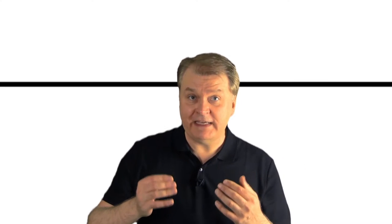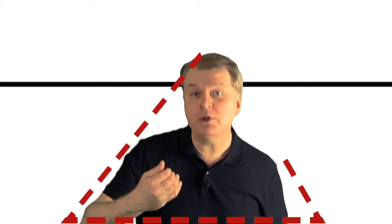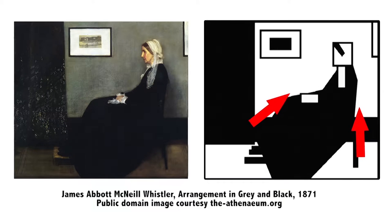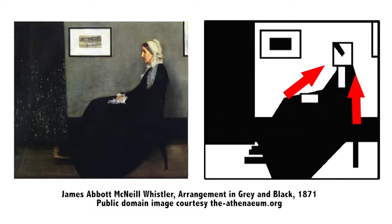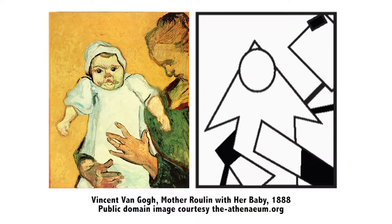Focal point. Horizontal lines create stability. Diagonal lines create visual movement. They can be used to draw your attention to an important part of the composition, or focal point. When I talk about composition, this Van Gogh piece is one of my favorite examples. The mother's body is a nice framing element that helps direct attention to the child, and the child's body is literally a big arrow directing your attention to the child's face, which is the focal point of the composition.